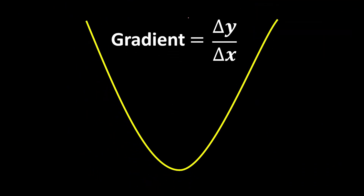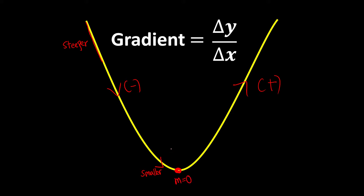Meanwhile, if you look at the gradient of a curve, you can see that the gradient keeps on changing. Here we have a negative gradient, while going up is represented by a positive gradient. Whenever we have a steeper line the value is bigger, and when we have a flatter line the gradient is a smaller value. At a turning point, the gradient is supposed to be 0, because it's almost like a flat horizontal line, and a horizontal line has a gradient of 0.